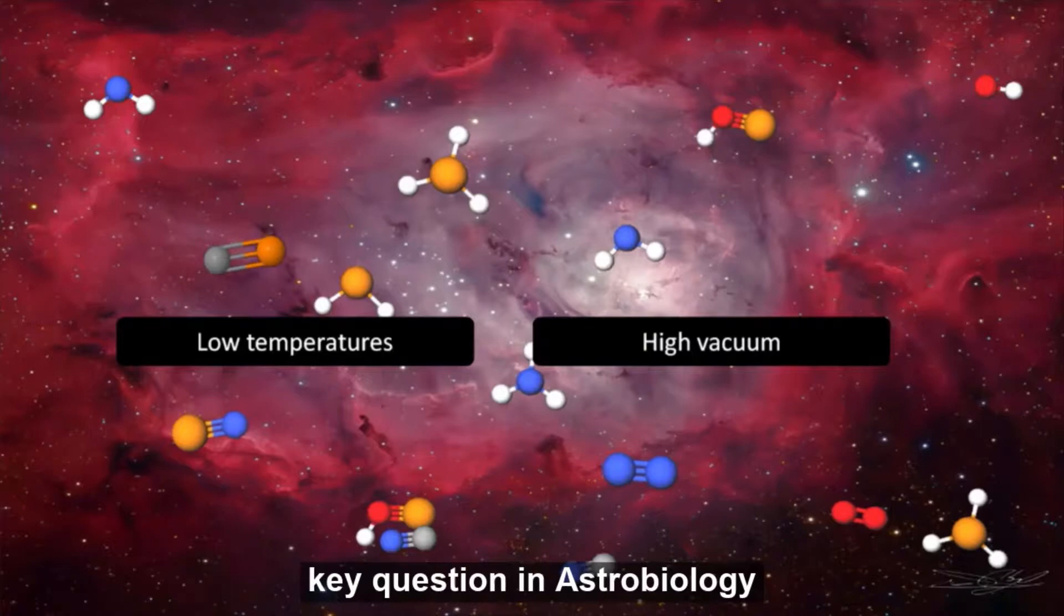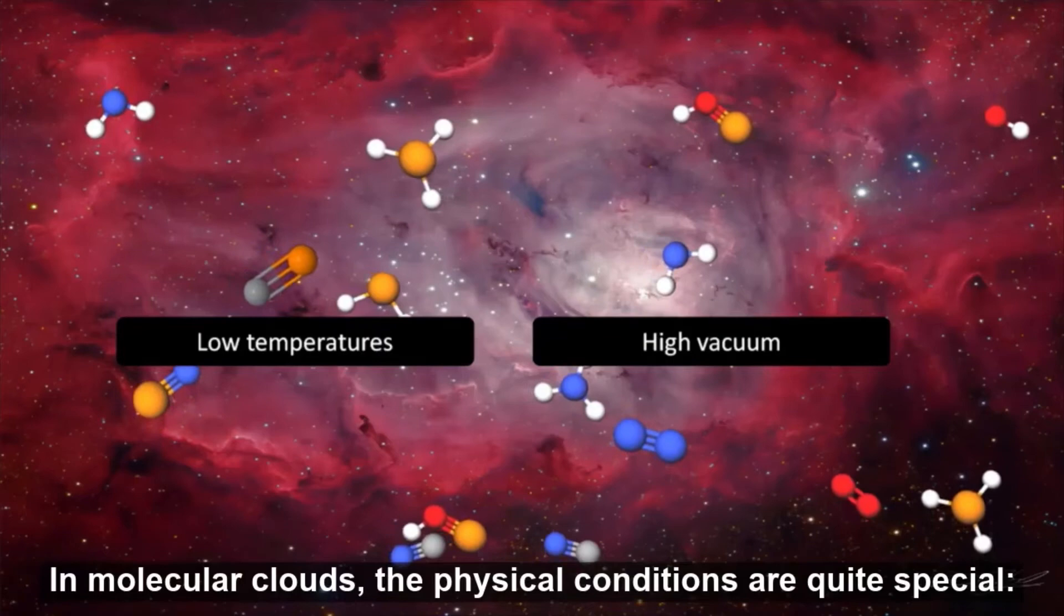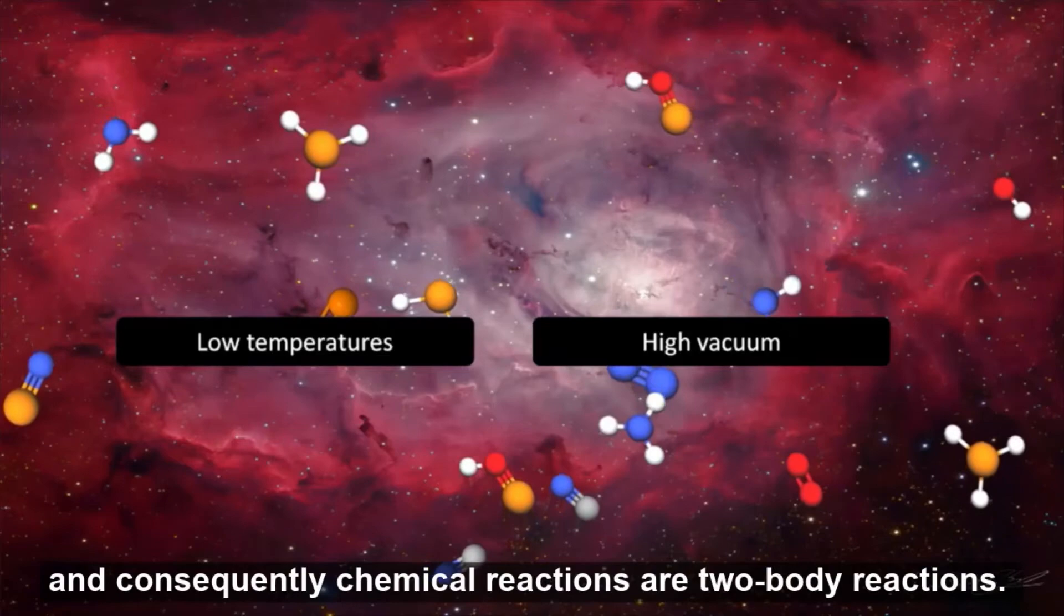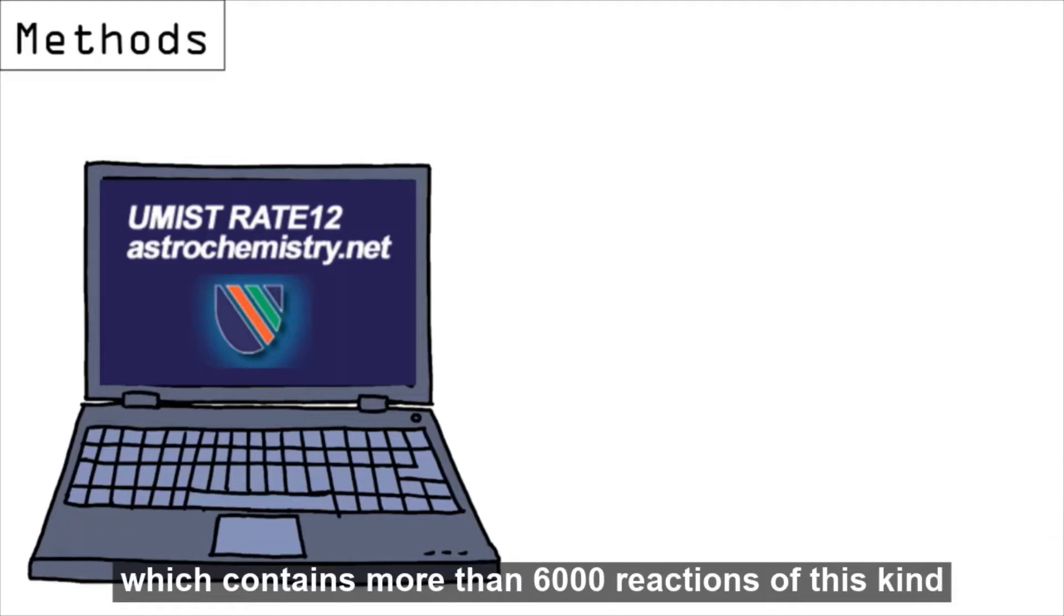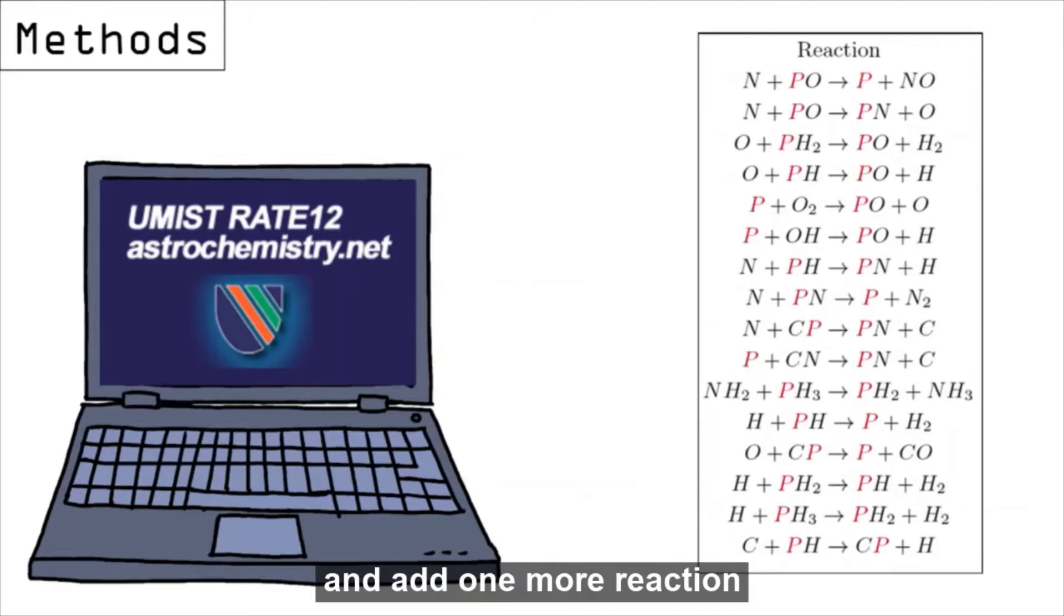We must mention that, in molecular clouds, the physical conditions are quite special. Chemistry occurs at very low temperatures and high vacuum, and consequently, chemical reactions are two-body reactions. So, our starting point is an astrophysical database called UMIST, which contains more than 6,000 reactions of this kind. We extract the most important ones containing phosphorus, and add one more reaction.